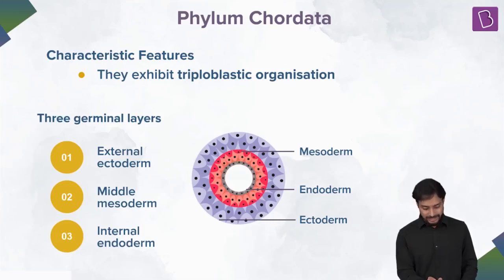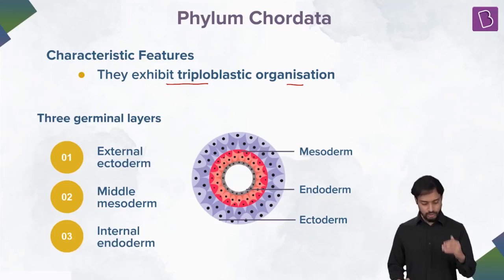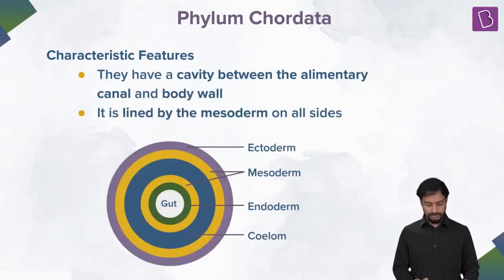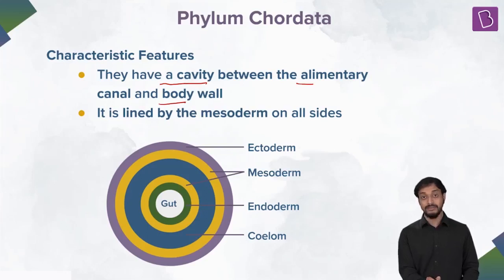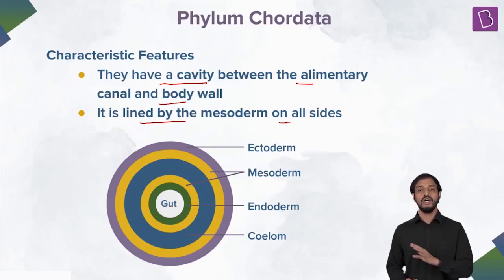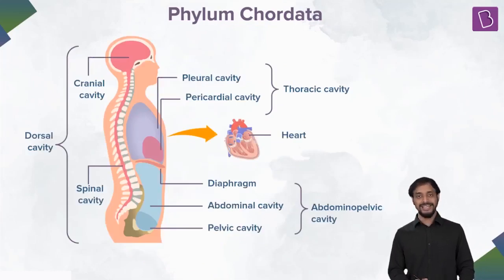Chordates exhibit triploblastic organization — ectoderm, mesoderm, and endoderm. They have a cavity between the alimentary canal and the body wall, meaning they are coelomates, lined by mesoderm on all sides. So animals belonging to phylum Chordata are coelomates and triploblastic.